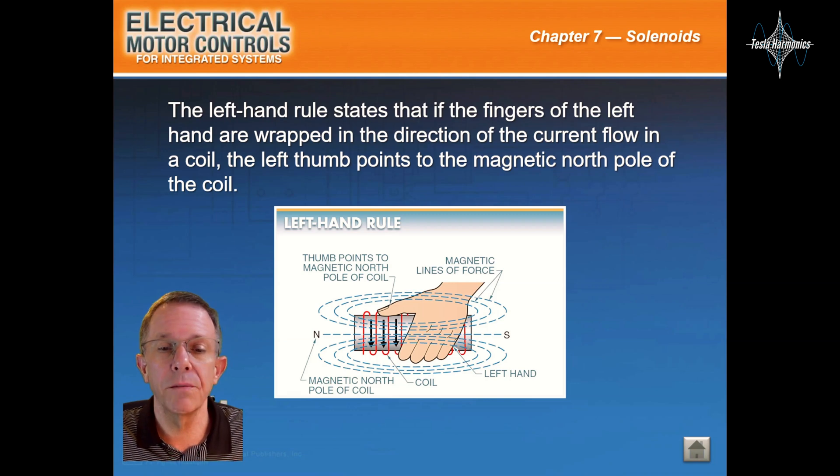The left hand rule states that if the fingers of the left hand are wrapped in the direction of the current flow in a coil, the left thumb points to the magnetic north pole of the coil.